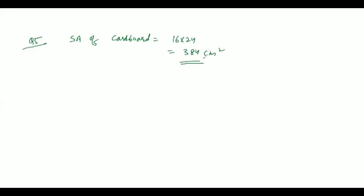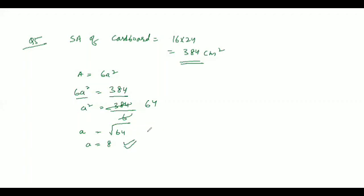We have to make the cube. So surface area would be intact. There would be no change in surface area. Area of cube is equal to 6A square. So 6A square would be equal to 384 because surface area would be same. So A square equal to 384 by 6. That's 64. So A is equal to under root 64. So A equal to 8. So size of the cube so formed would be 8 cm. I hope the question is clear.